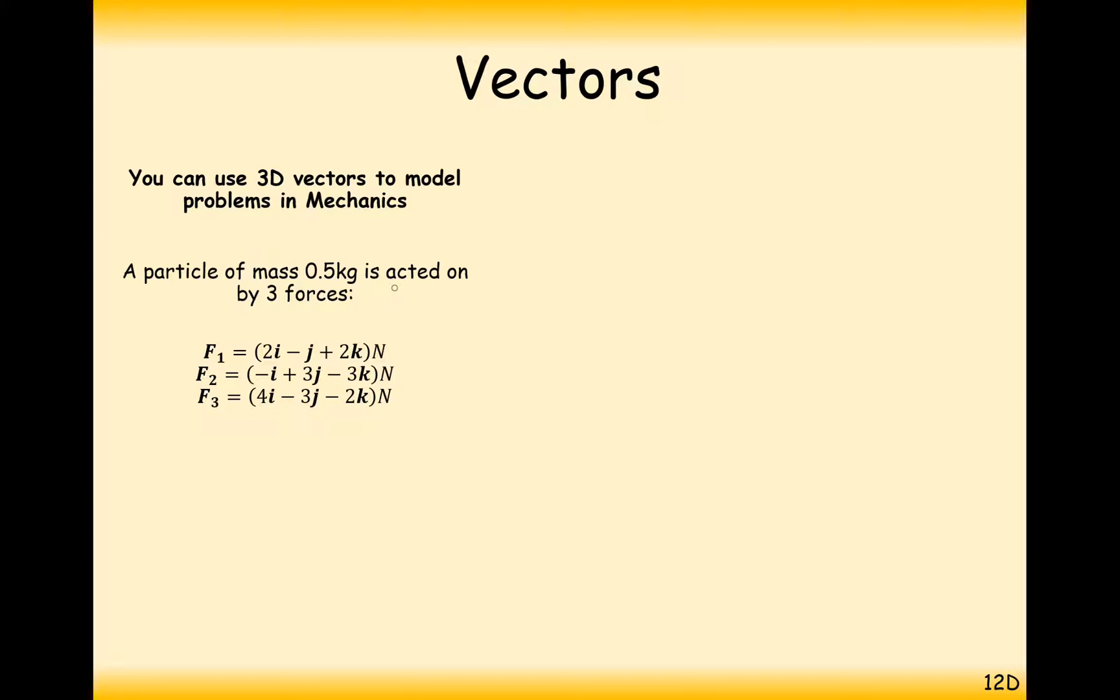So what we have here is three forces and a particle with a mass of 0.5 kilograms. Effectively, we've got a particle with three different strings attached to it and three forces pulling it in three different directions by different amounts of magnitudes.